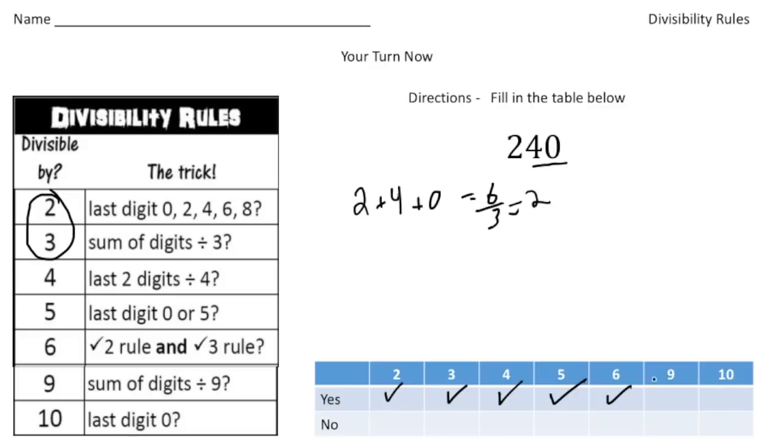Now, for number 9, remember the sum of the digits has to be divisible by 9. And our sum is 6, right? And 9 can't go into 6 evenly. So that's a no. And then finally, for 10, it has to end in a 0. And in this case, it is a yes.